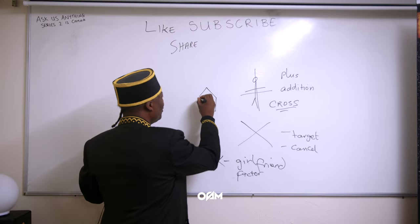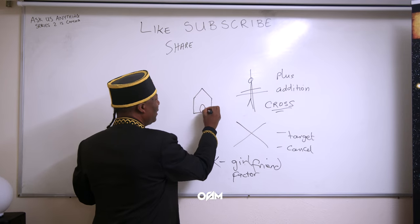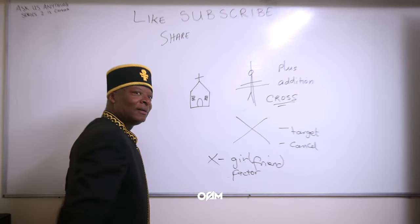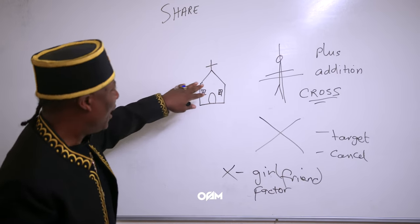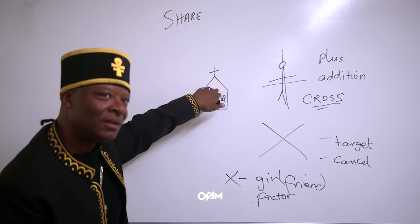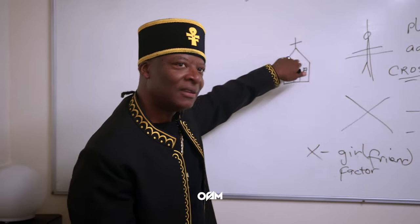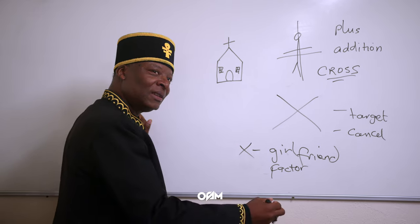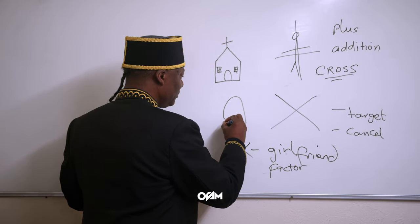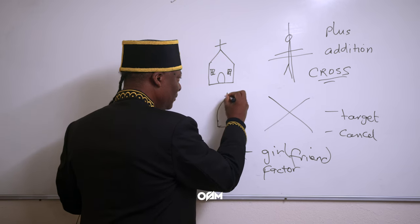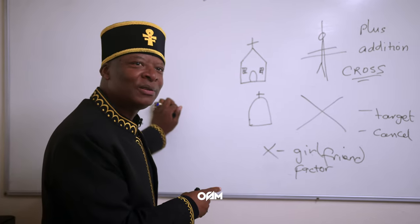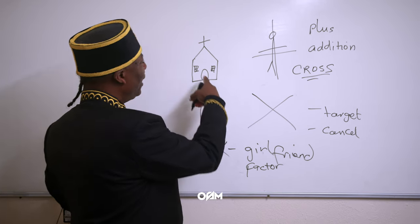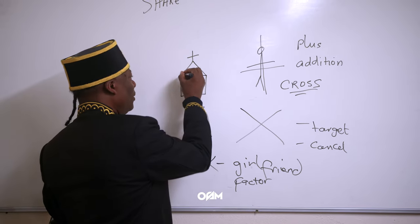When you go to a church — forgive my drawings — you have a cross at the top and the people inside are mentally dead. Then you go to the graveyard and somebody dies and they put a cross on the tomb. So you've got people that are physically dead in the graveyard and people that are mentally dead in the church.